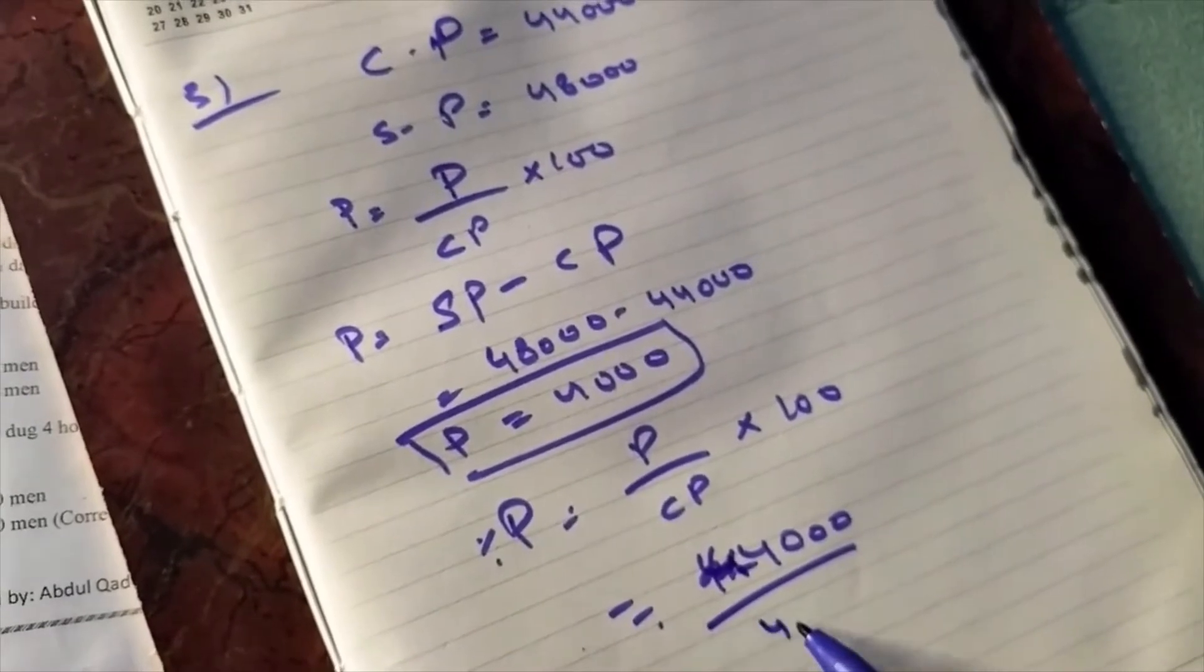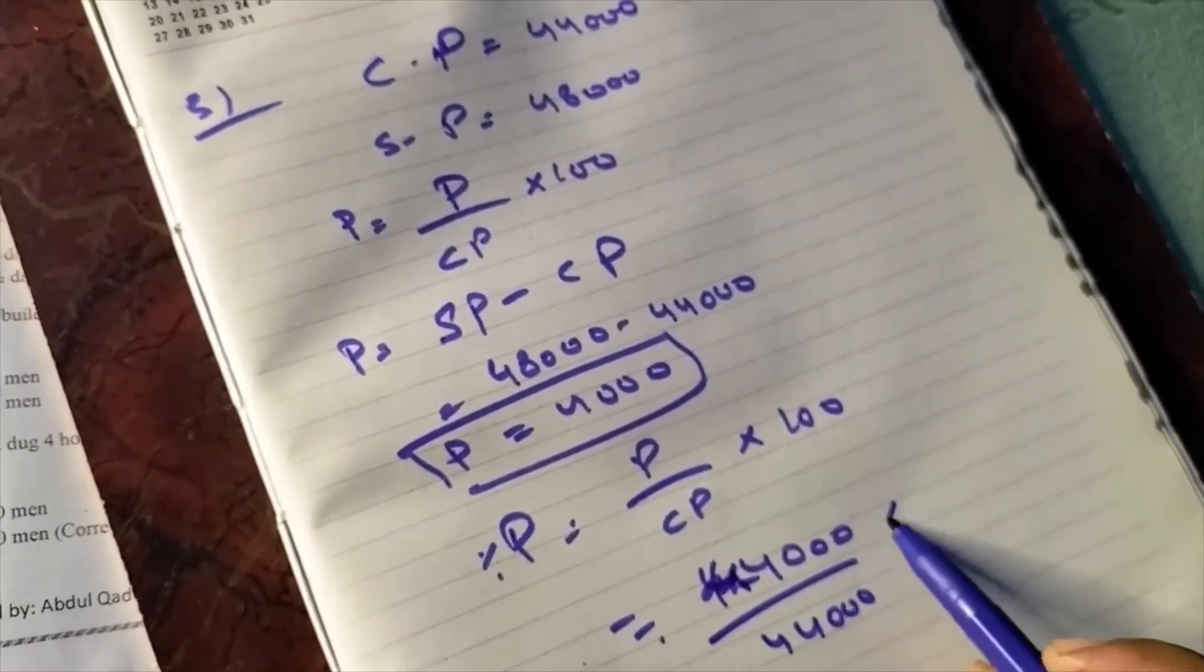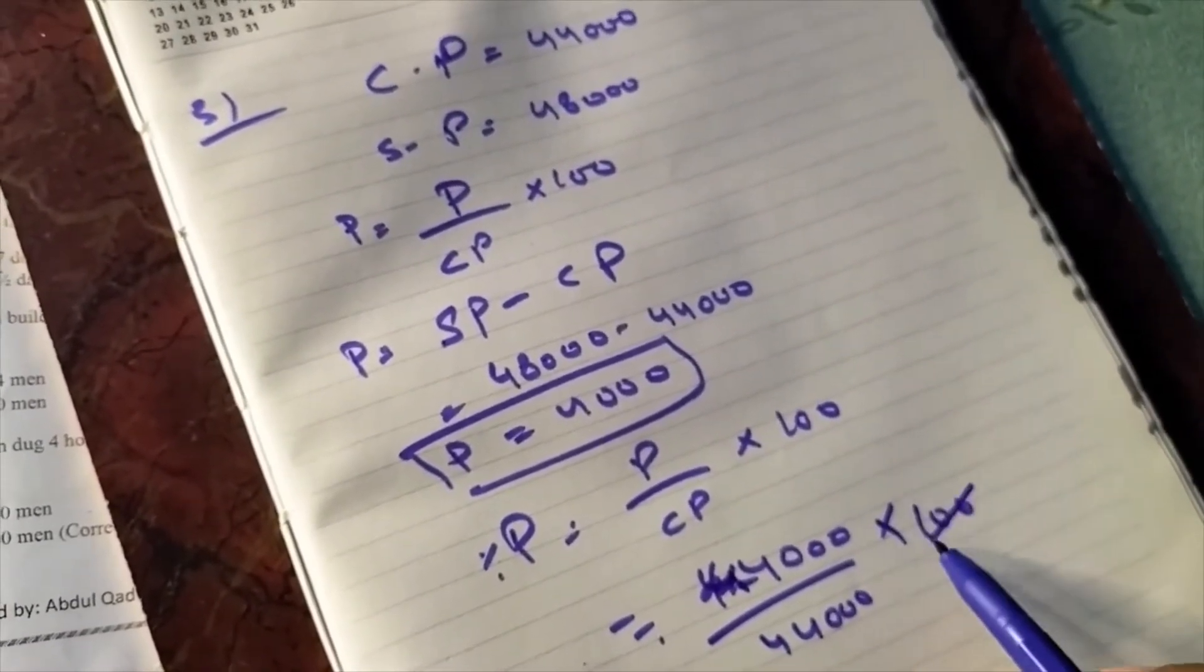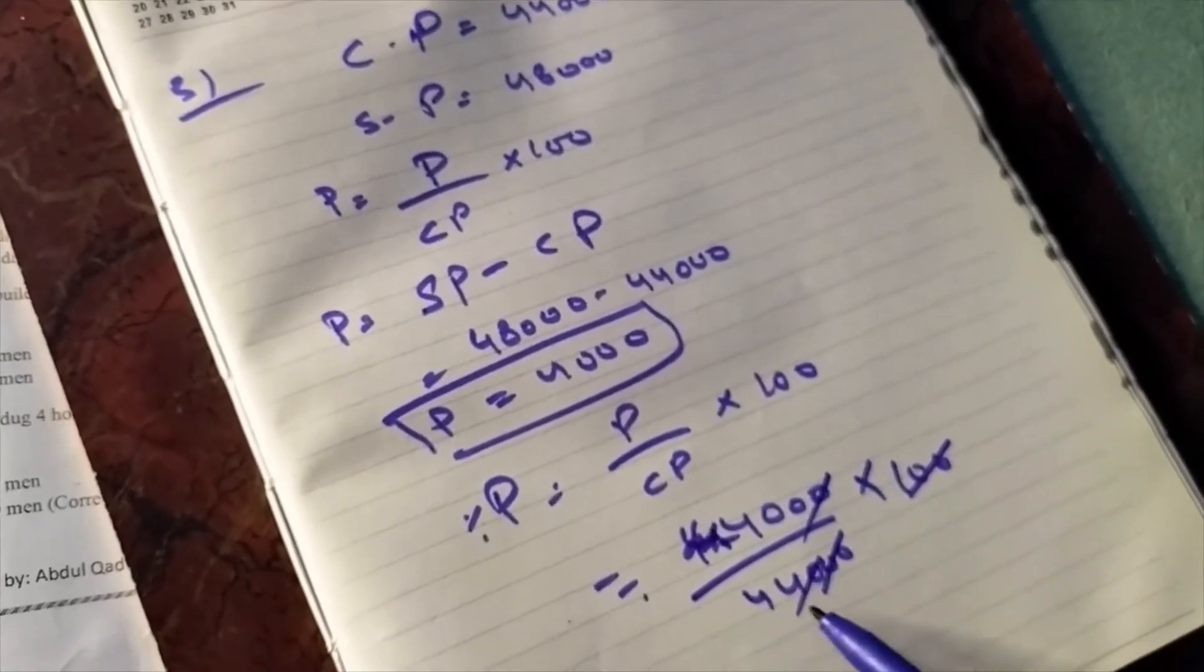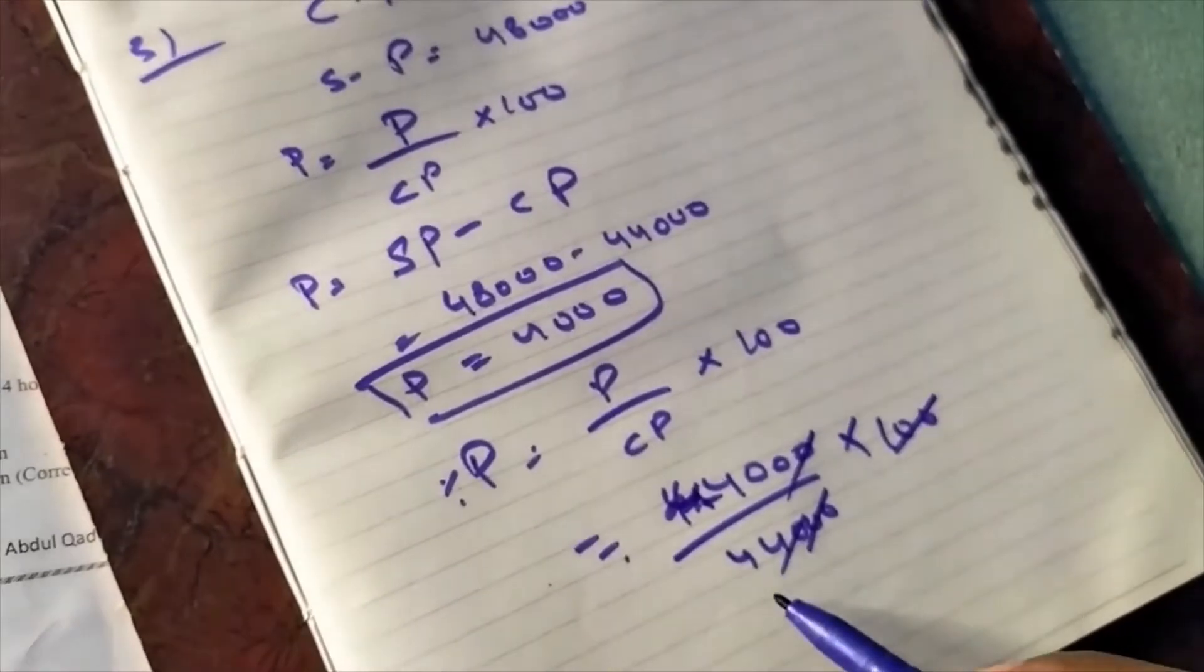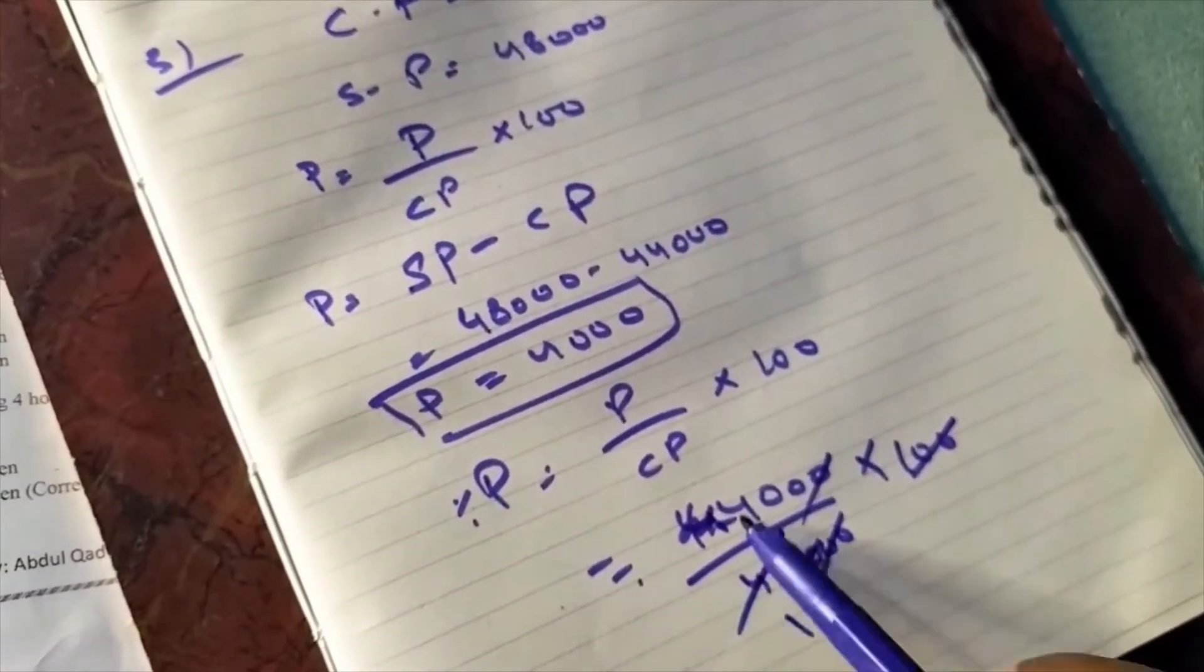Multiply by 100. Cancel the zeros: 2 zeros here, 2 zeros here, 1 zero here, 1 zero here, 1 zero here. Now simply use the table: 4 into 11 is 44, and this is 100.